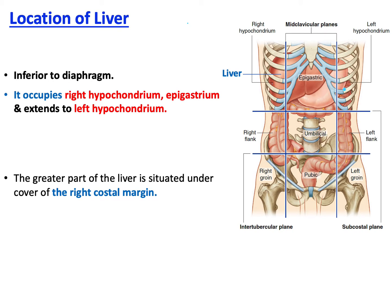Four planes are used: two vertical mid-clavicular planes — the right mid-clavicular line goes from the midpoint of the clavicle down to the midpoint of the inguinal ligament, and another on the left side. Horizontally, two lines are used: the subcostal line along the subcostal margin, and the inter-tubercular plane. There is a separate video on the division of the abdomen you can watch.